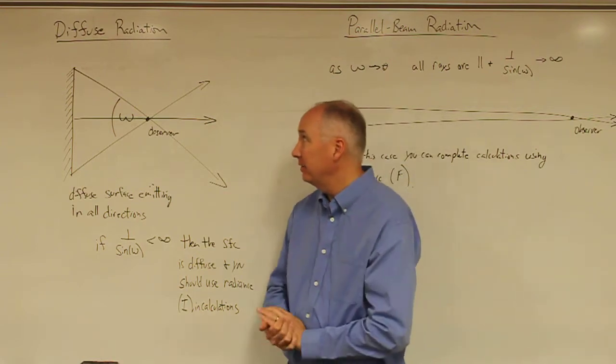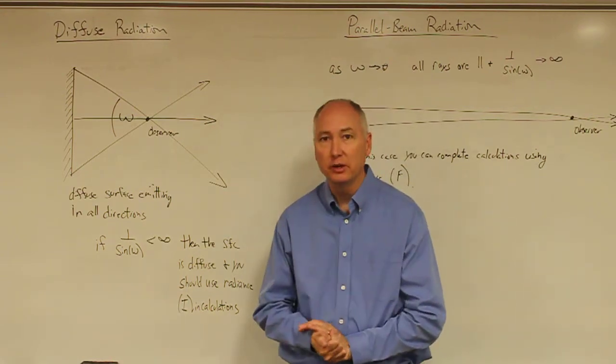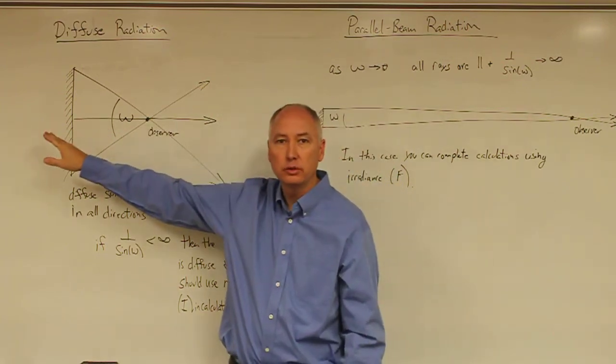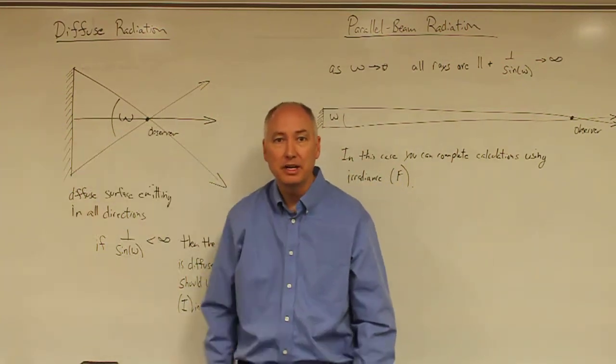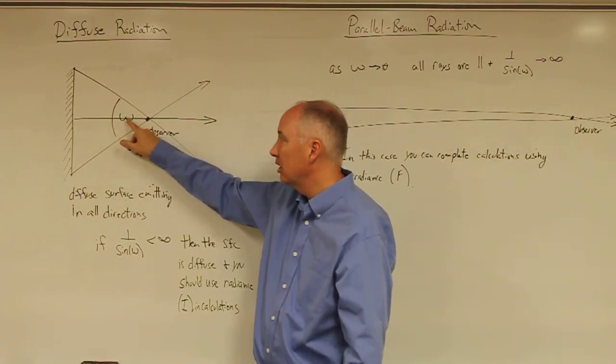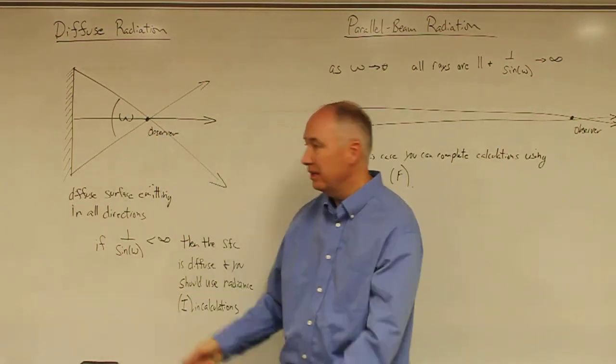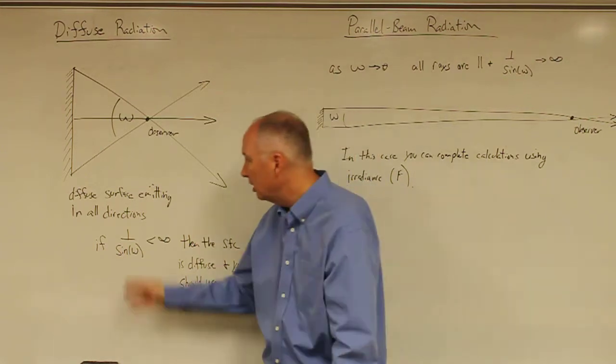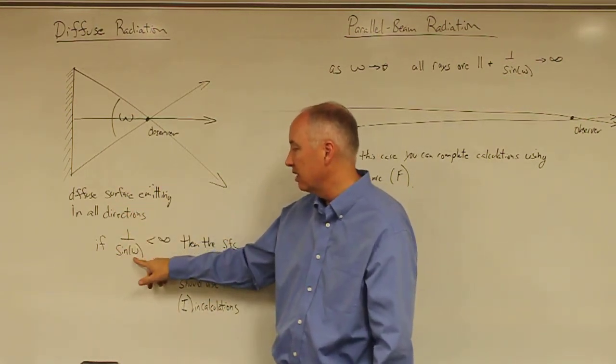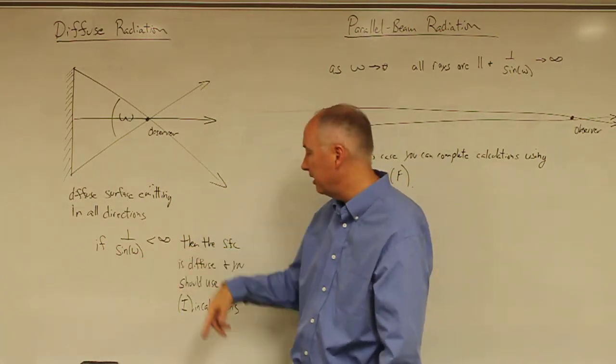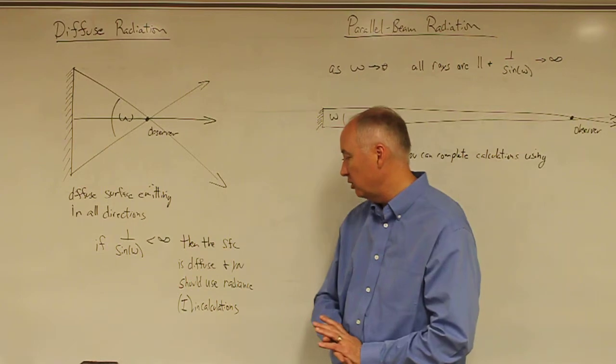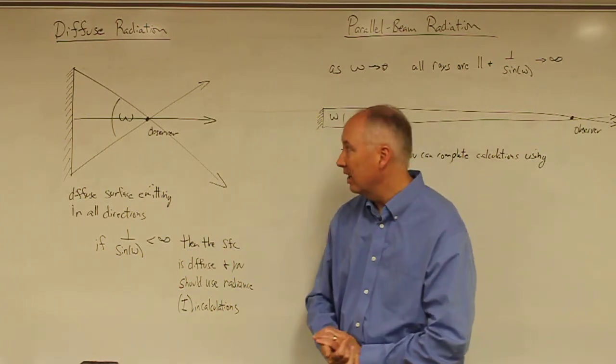If we have two different situations here, we have a situation where the observer is relatively close to an object that is emitting radiation, and the solid angle associated with that is non-negligible. In that situation, the 1 over sine of the solid angle is less than infinity, then the surface is diffuse, and you should use radiance in your calculations.